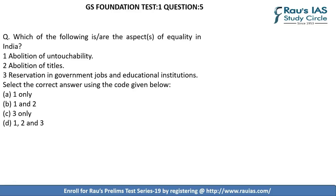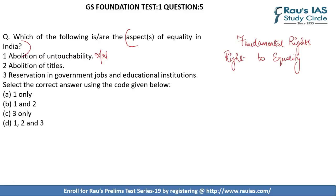Question 5 asks which of three statements are aspects of equality in India. These statements pertain to the Right to Equality under fundamental rights. Article 17 of the Indian constitution prohibits untouchability, and it is forbidden to practice untouchability in any form — so statement 1 is correct. In the second statement, abolishing of titles is covered under Article 18 of the Indian constitution, and thus statement 2 is also correct.